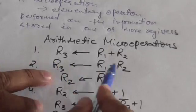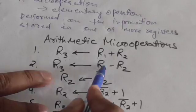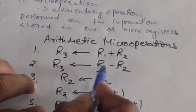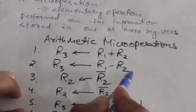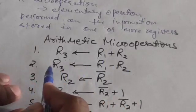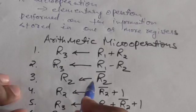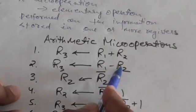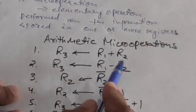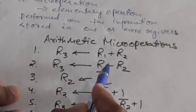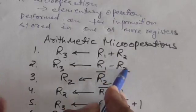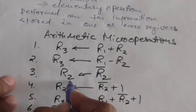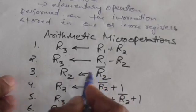This next statement represents a micro operation in which the content of R1 minus R2 is transferred into another register R3. So R1 and R2 are two registers that store some content, and the result of R1 minus R2 is transferred to register R3.